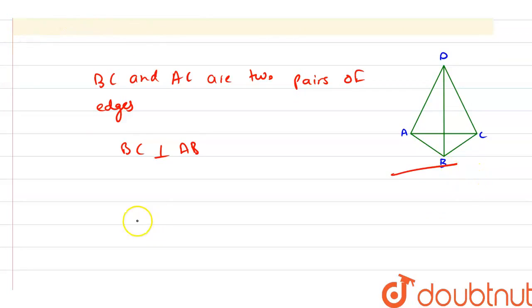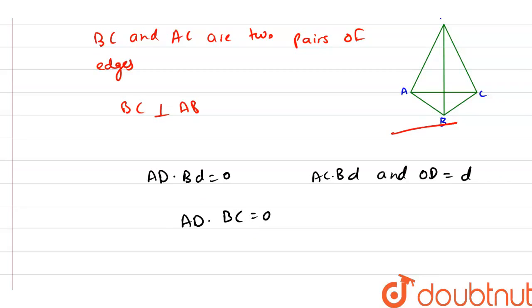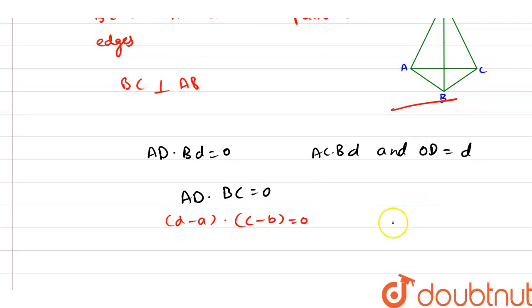Here we have that AD dot BD is equal to 0. So, here we have AD dot BC equals 0. From here we have AD, that is D minus A, dot BC, which is C minus B, and that equals 0. Let us say this is equation number 1.